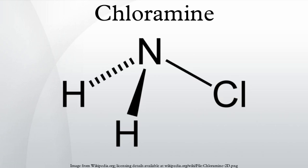Reactions: In water, chloramine is pH neutral. It is an oxidizing agent: NH2Cl + 2H⁺ + 2e⁻ → NH4⁺ + Cl⁻. Reactions of chloramine include radical, nucleophilic, and electrophilic substitution of chlorine, electrophilic substitution of hydrogen, and oxidative additions.